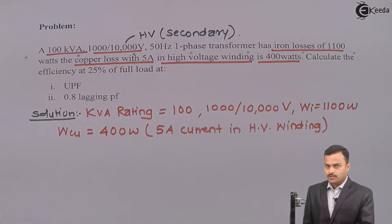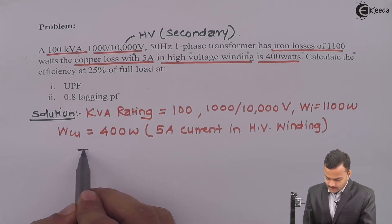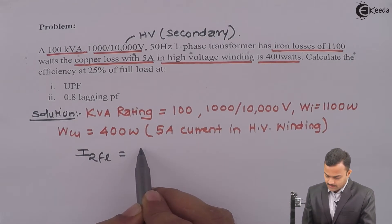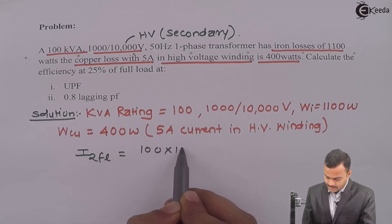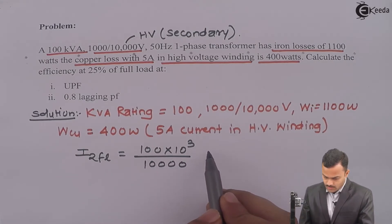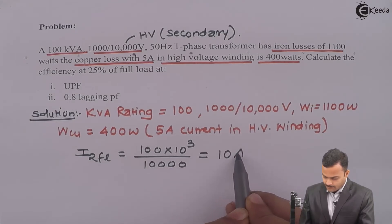So I need to find out the full load copper loss with respect to secondary full load current. This thing you have to keep in mind. So first we will do that. First I will calculate secondary full load current, which is KVA rating divided by secondary voltage, which is 10000. So if you solve, you will get I2FL as 10 ampere.